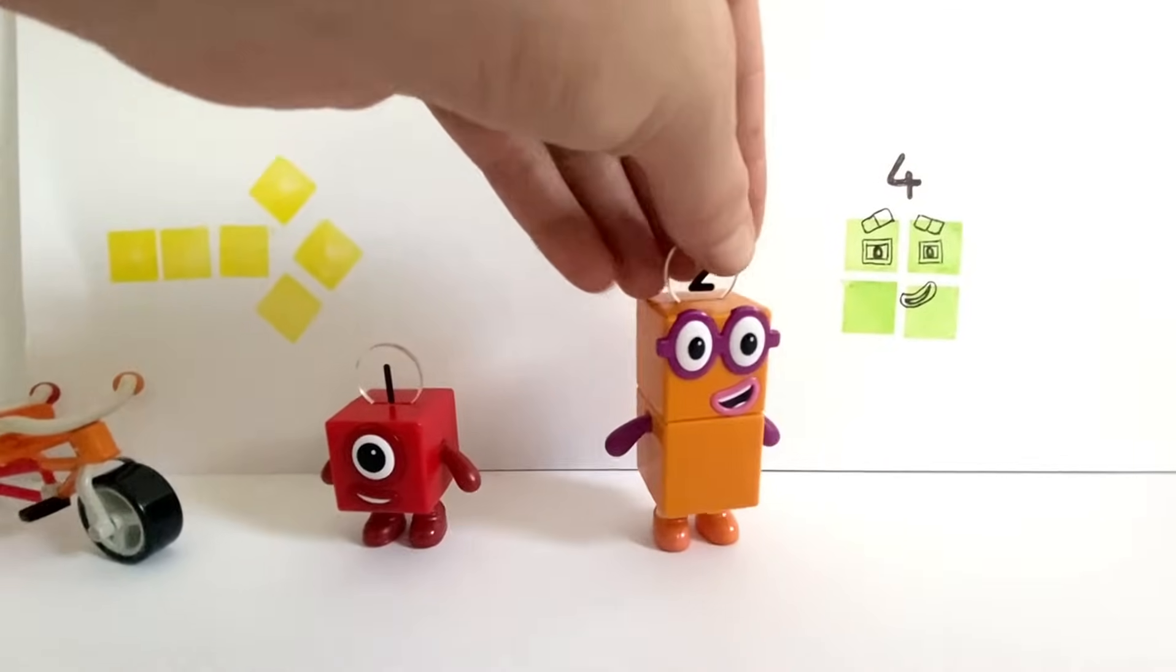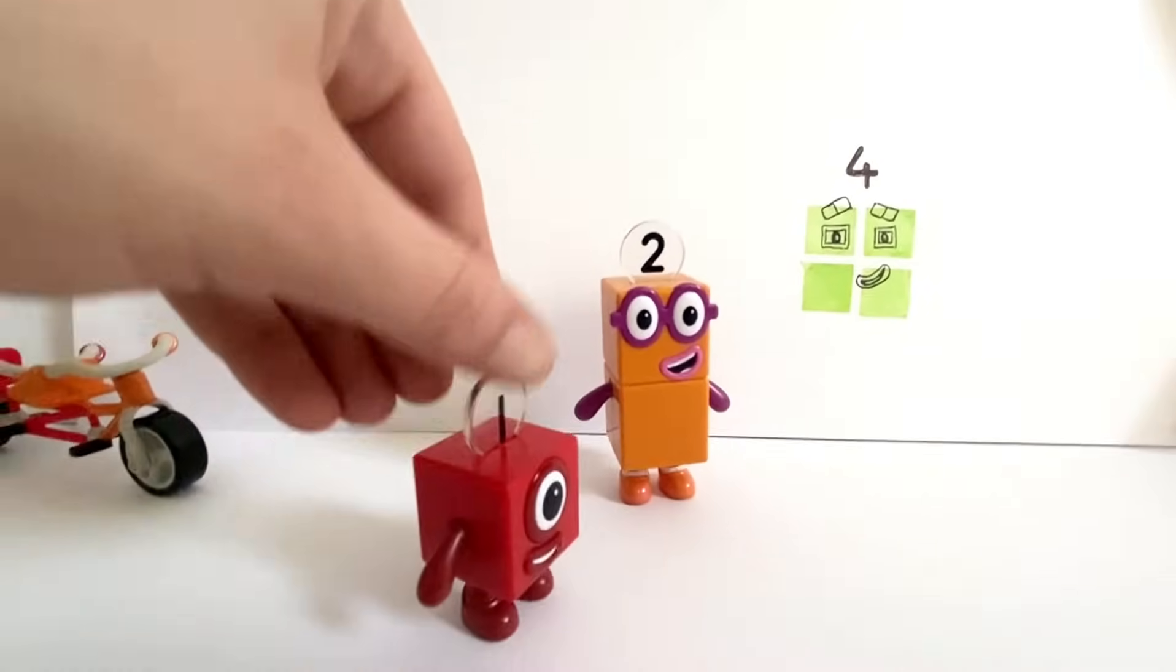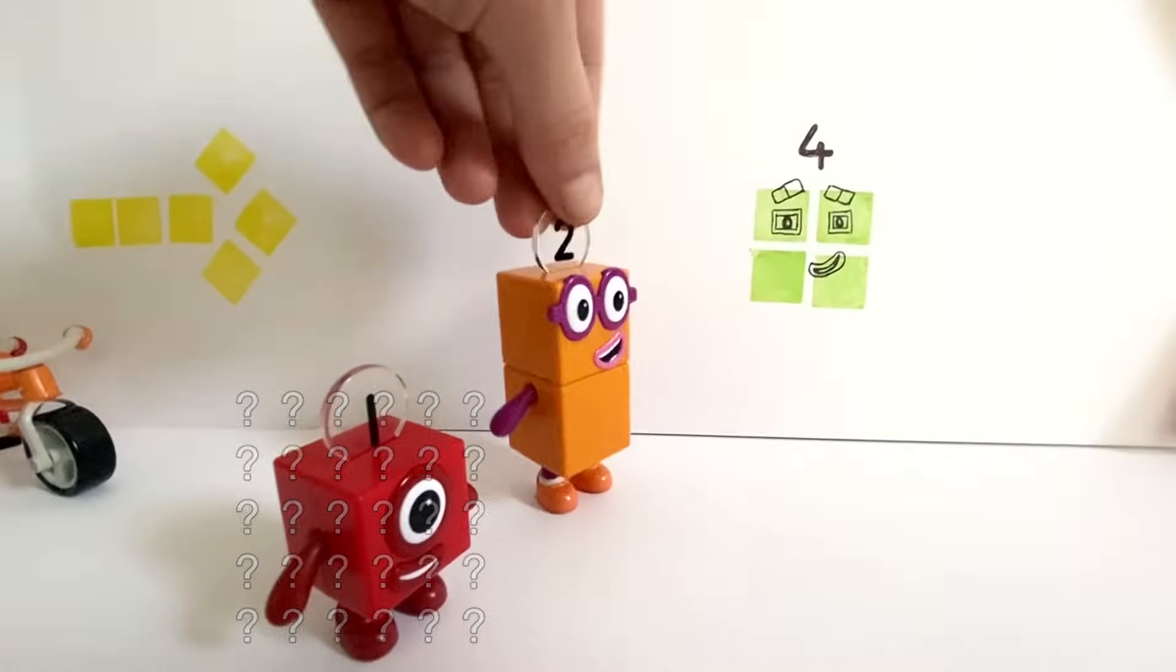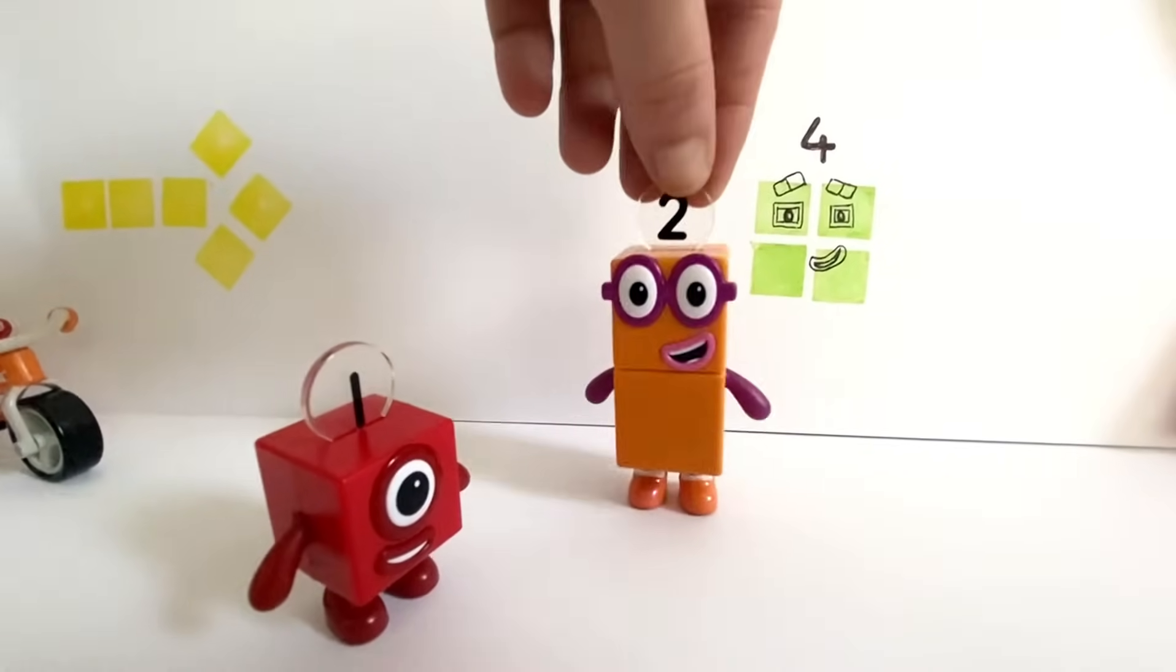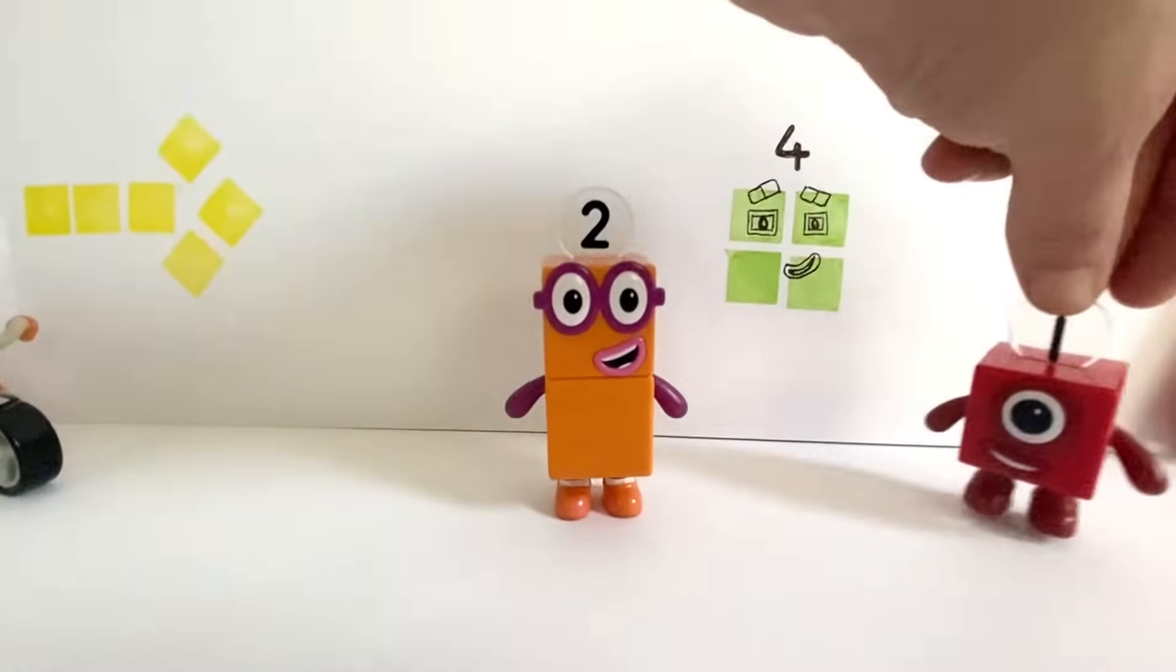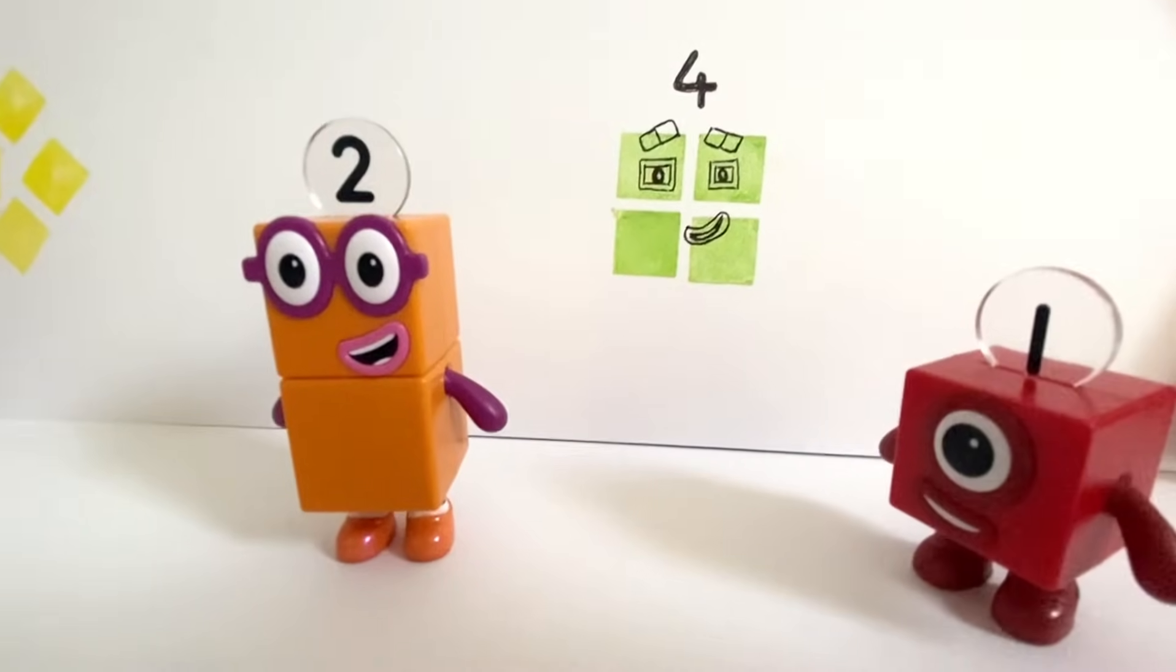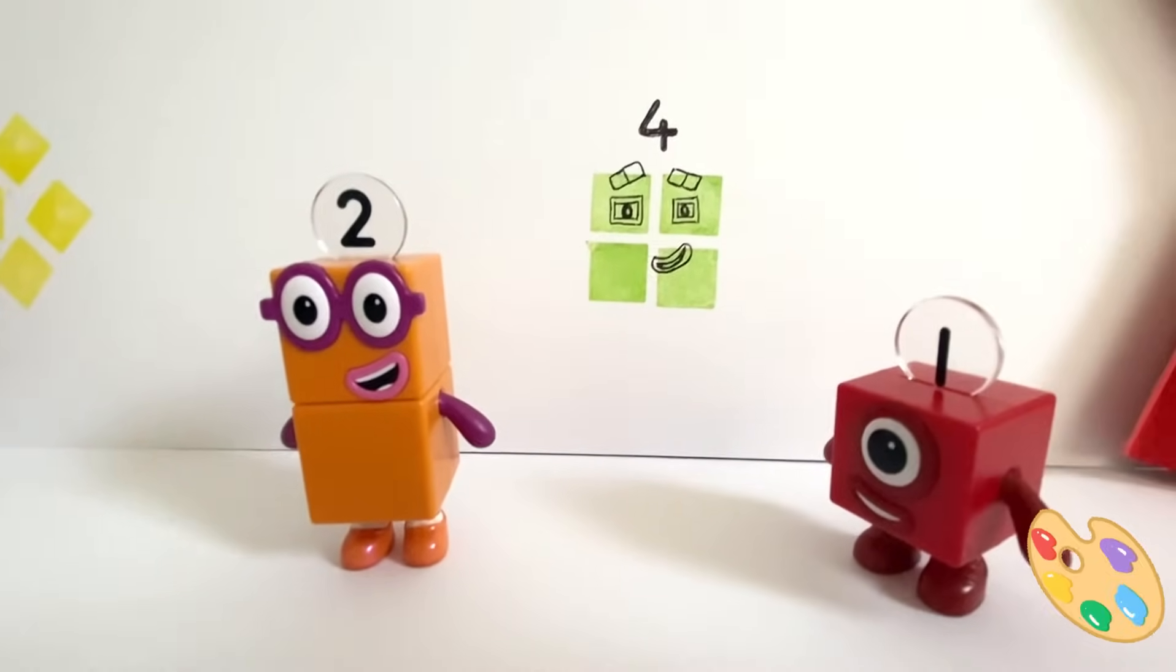Number 2 spot something! It's NumberBlock 4! NumberBlock 1 is confused. Look! NumberBlock 4 is standing statue still. No NumberBlock 2, it's not NumberBlock 4. It's a painting of NumberBlock 4.